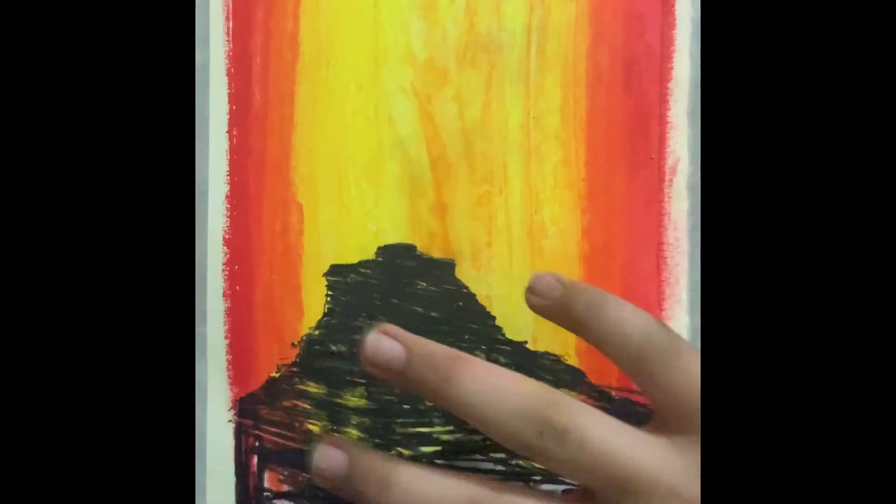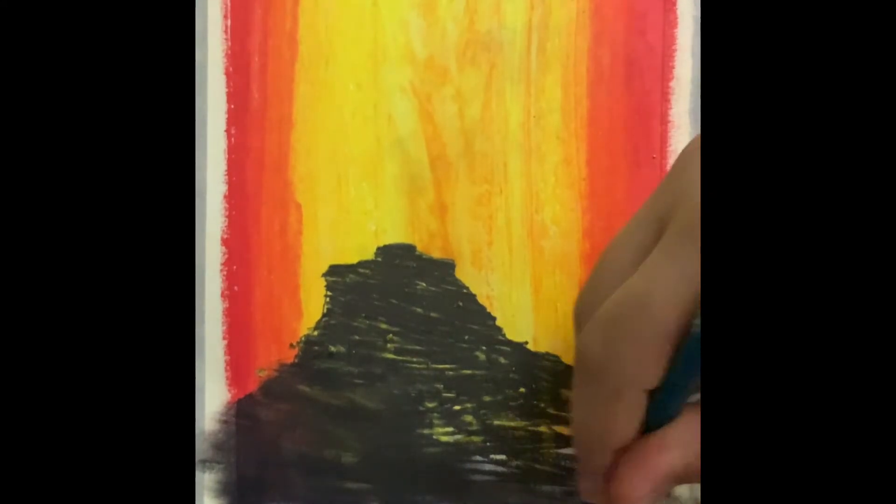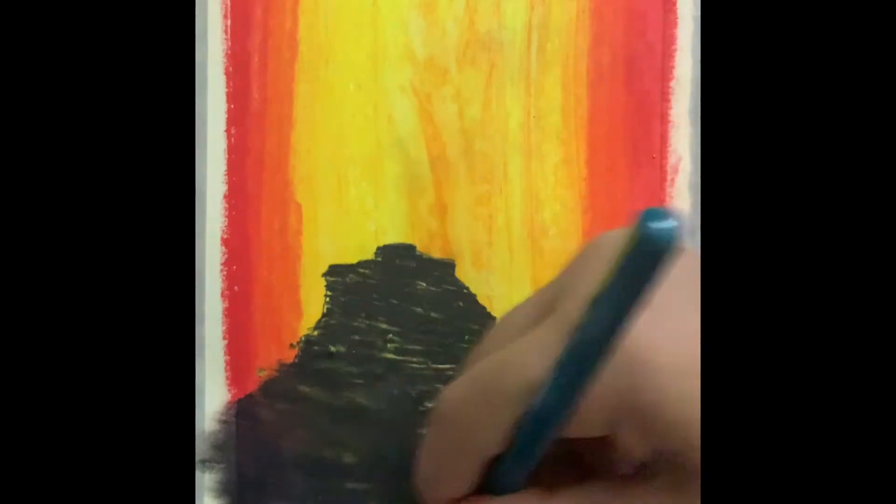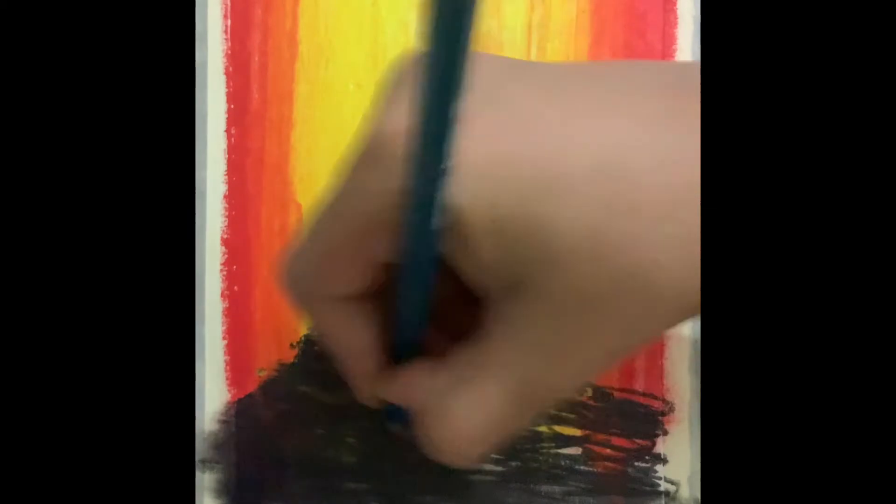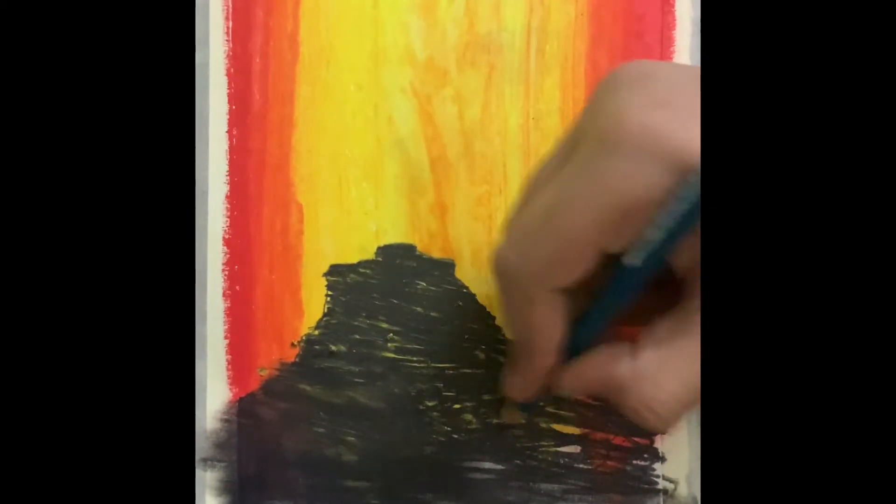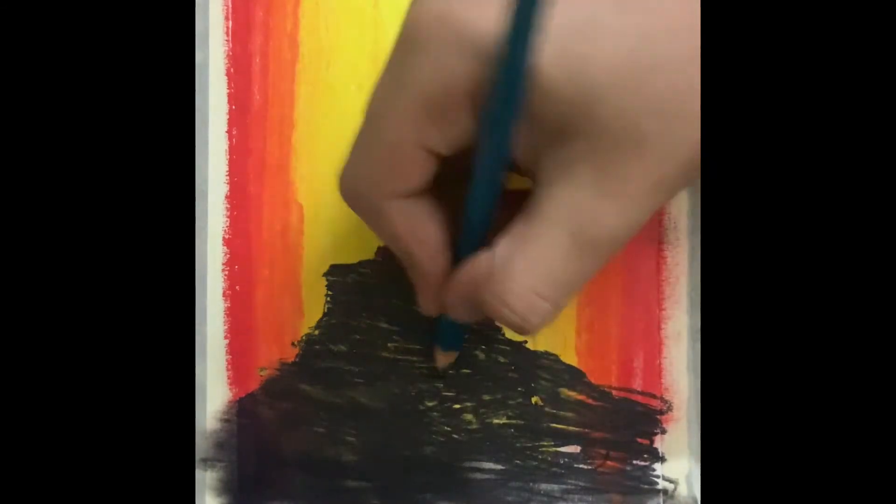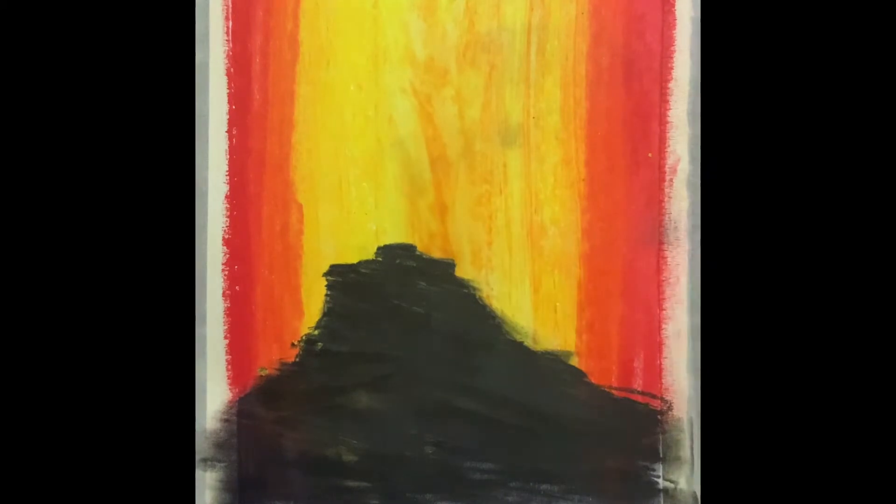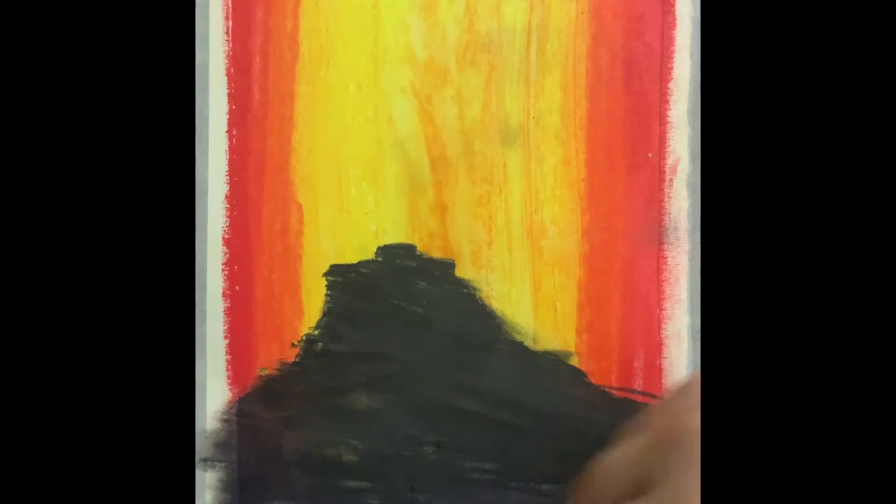And then just smudge it. Shading pencils I can just smudge it, and then if you are using normal pencils you will need to smudge it really, really, really hard. As you now know, the bottom part doesn't look that much. It takes time, so you can.